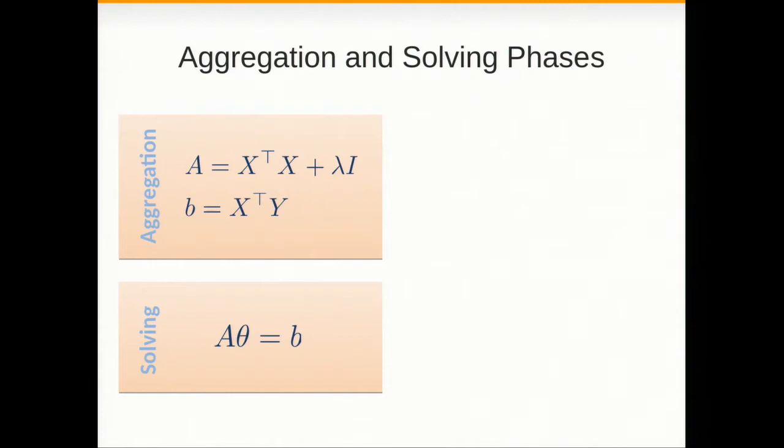While the solving phase has dimension d times d and d. This is independent of the number of records so it's important to have a very fast aggregation phase. Initially the aggregation phase is going to be the bottleneck.